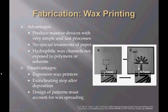Wax printing is a two-step process where wax is printed onto the filter paper and then placed in an oven for the wax to melt into the paper. Advantages include that it's extremely simple and fast to fabricate, requires no special treatments of the paper, and the hydrophilic wax channels are not exposed to any polymers or solvents. Disadvantages include the expense of the wax printer, an extra heating step required for wax penetration, and most crucially, difficulty of design due to wax spreading — unlike other methods, the wax flows not only vertically but also laterally.